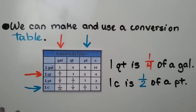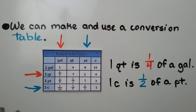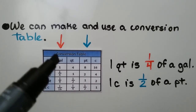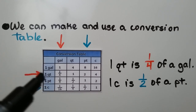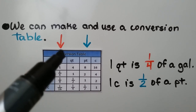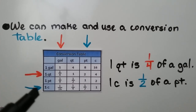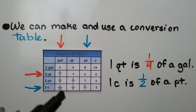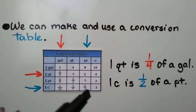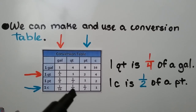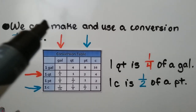We can make and use a conversion table. One quart is equal to one-fourth of a gallon. One cup is equal to one-half pint, and one cup is equal to one-fourth quart. Start reading on the left, and then look up to see the unit it's equal to.